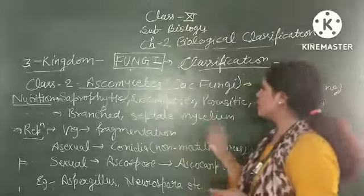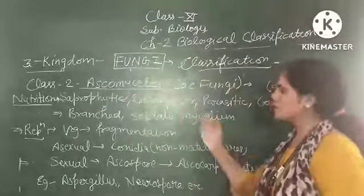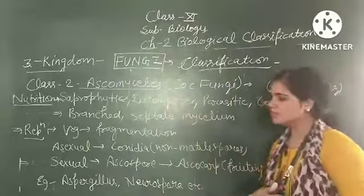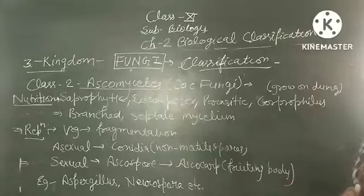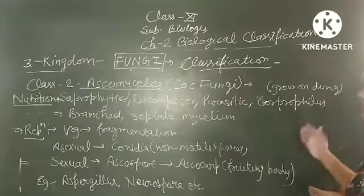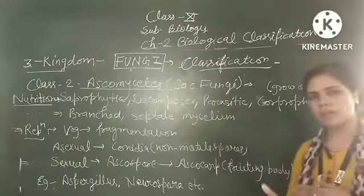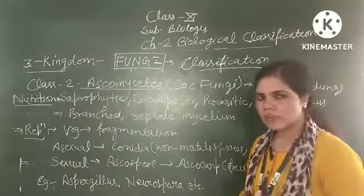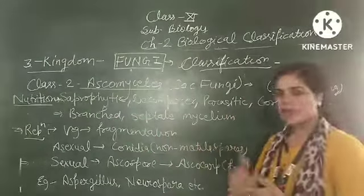Saprophytic, decomposer, and parasitic. The members of this class can show saprophytic nutrition and some members are named as decomposers and some are parasitic members. These members are also known as coprophilous type. Coprophilous fungi are those fungi which can grow on the dung of cows. The mycelium of this class is branched and septate.